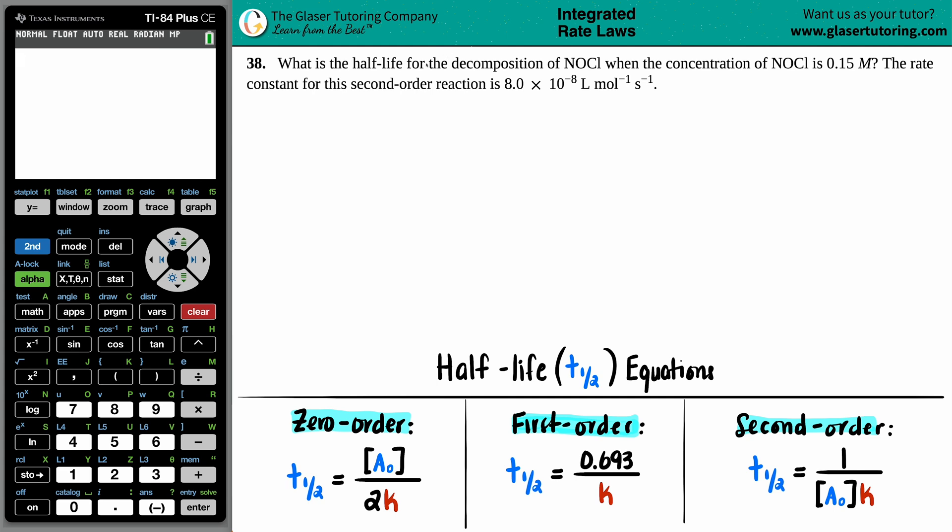Number 38. What is the half-life for the decomposition of NOCl when the concentration of NOCl is 0.15 molarity? The rate constant for this second-order reaction is 8.0 times 10 to the negative 8 liters per mole per second.